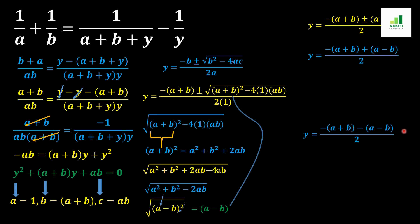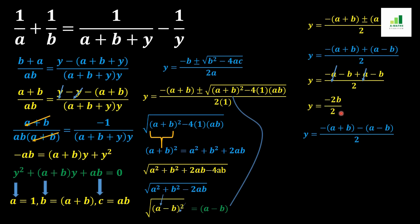For the first value: the minus distributes to give -a and -b, and the plus distributes to give +a and -b. So -a and +a cancel, leaving (-b - b)/2 = -2b/2. The two and two cancel, giving the first value y = -b.